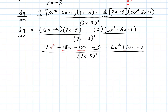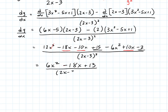Expanding in the numerator: 12x²−18x−10x+15 minus 6x²+10x−2. Combining like terms: 12x²−6x² gives 6x²; −18x−10x+10x gives −18x; and 15−2 gives 13. So the derivative simplifies to (6x²−18x+13)/(2x−3)².